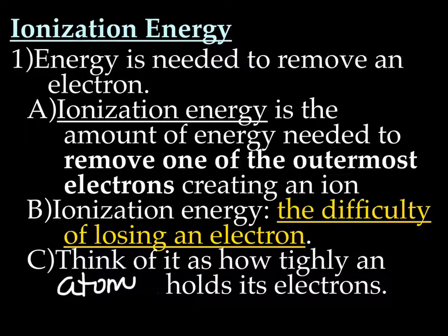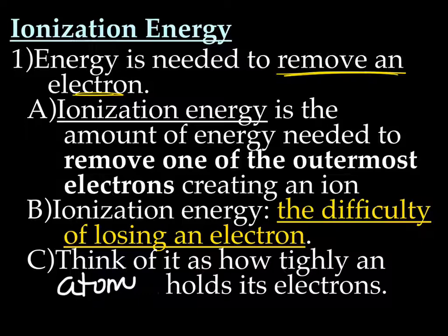Let's now talk about ionization energy. Quick warning: things get a little tricky right now because ionization energy and electronegativity are completely different, but their definitions sound very similar — they're exactly opposite. Ionization energy is the energy needed to remove an electron. It is the amount of energy needed to remove one of the outermost electrons — the valence electrons — creating an ion. Ionization energy is the difficulty of losing an electron.